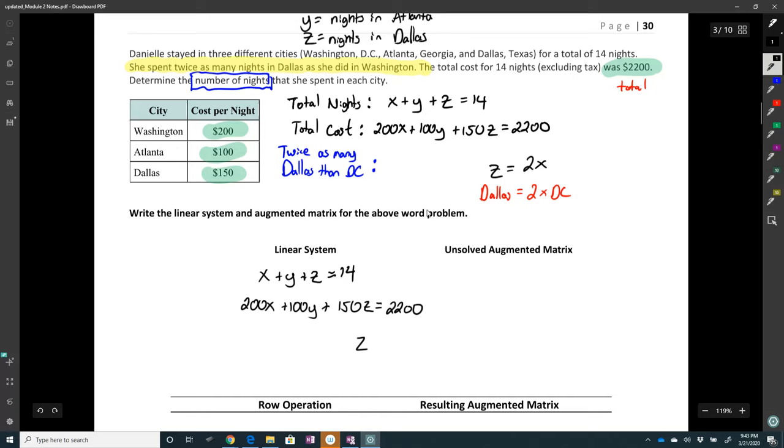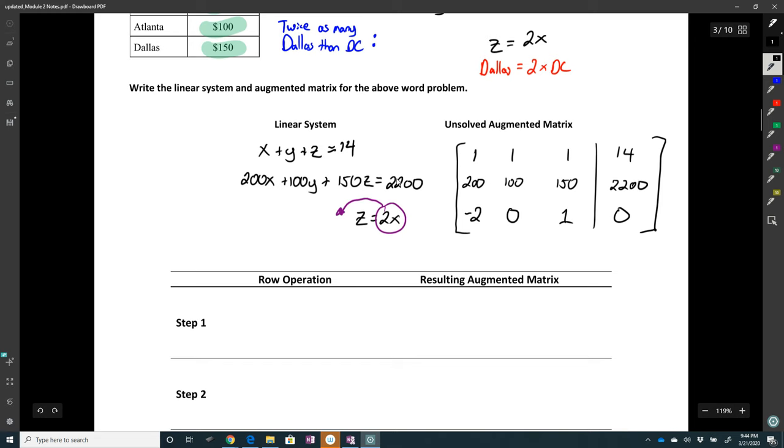Okay, and then the last equation is z equals 2x. So my unsolved augmented matrix. 1, 1, 1, 14, 200, 100, 150, 2200. And then here, if I get this 2x, and if I bring it to the other side, it'll become a negative 2x. So negative 2, 0, 1, 0. So that's my unsolved matrix.